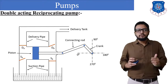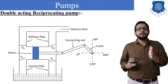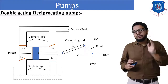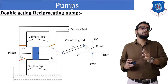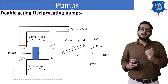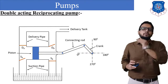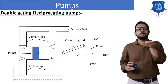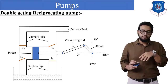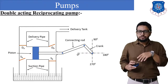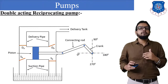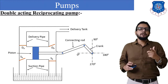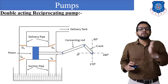Let's understand how it operates. Initially, when the crank is at the zero-degree position, the piston is at its inner dead center. We will name the strokes as the forward stroke and the reverse stroke. The forward stroke is when the crank moves from zero degrees to 180 degrees, and the reverse stroke is when the crank moves from 180 degrees back to zero degrees. In the forward stroke, the piston moves from inner dead center towards the outer dead center, that is, towards the right side.